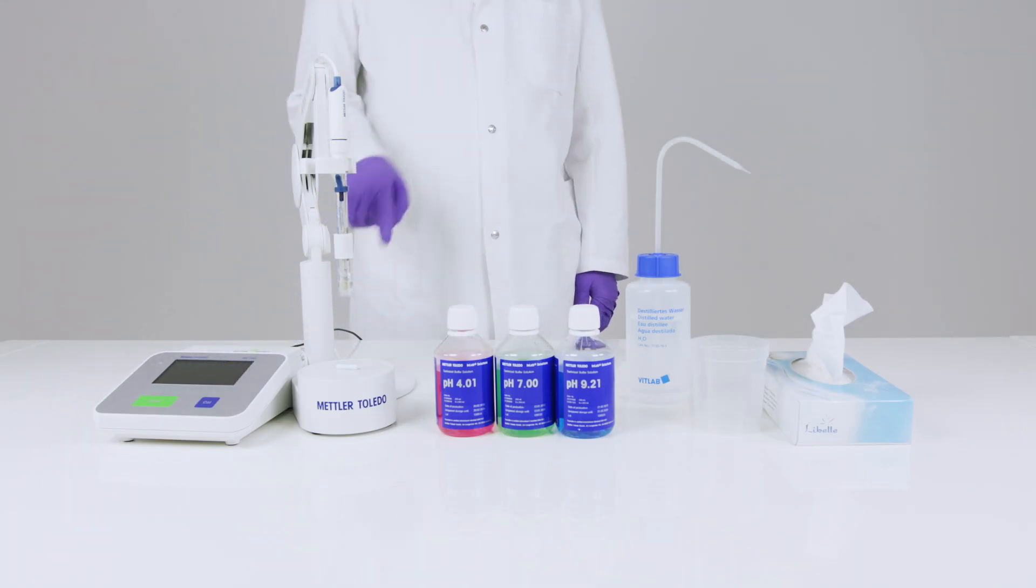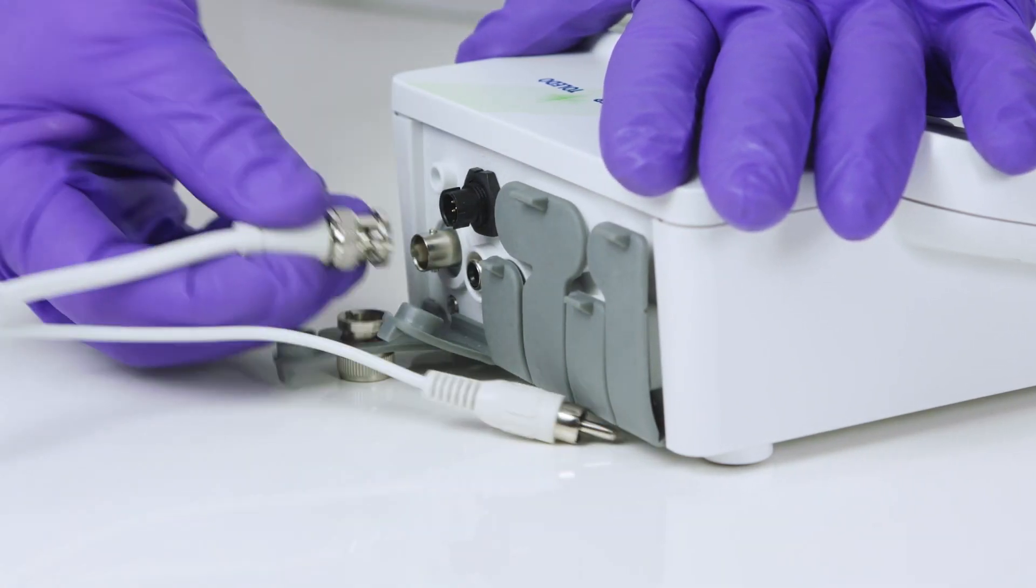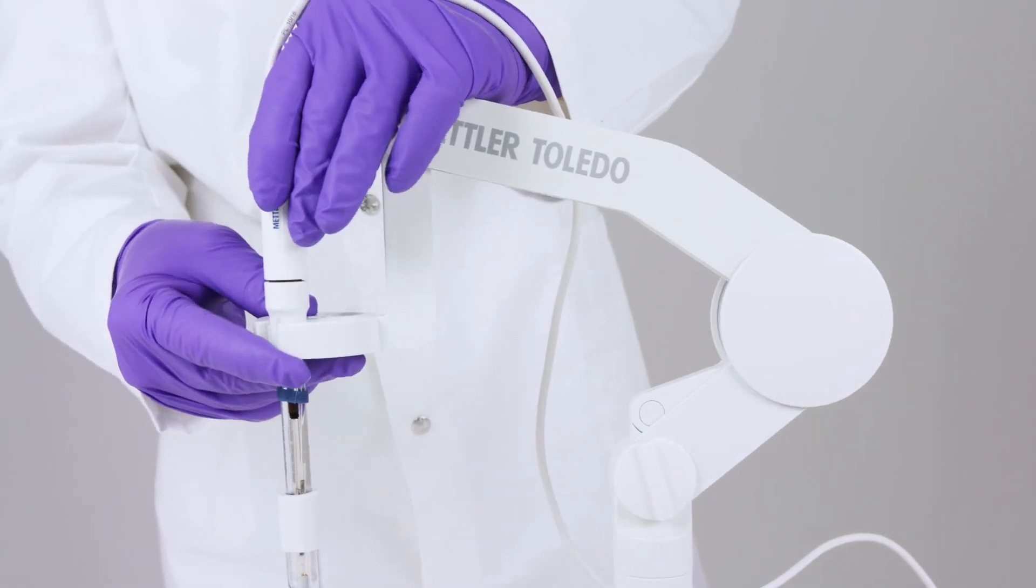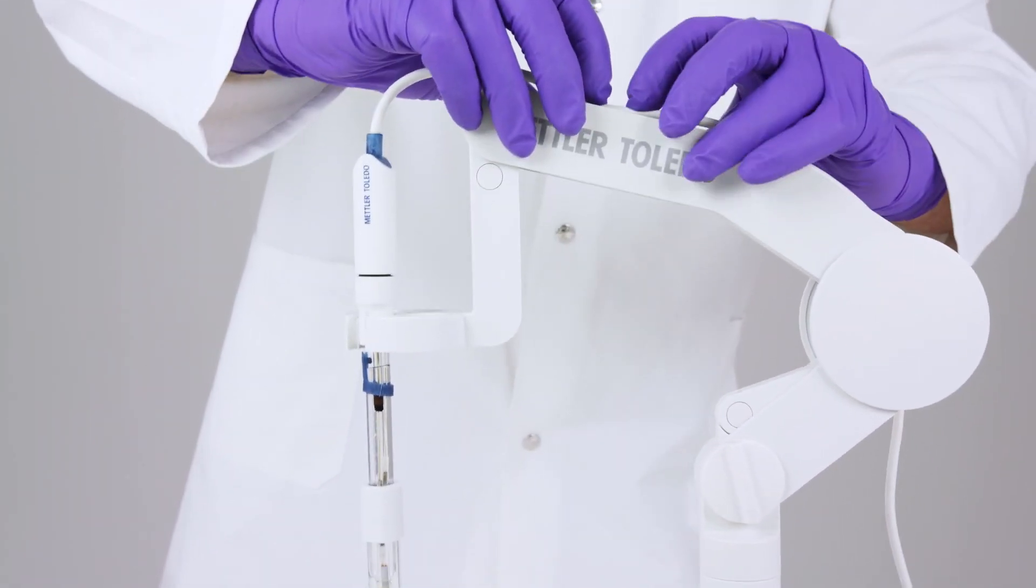You will need the meter, obviously, a sensor, a set of buffers, some distilled water, some lab-style tissues and, of course, a safe pair of hands. When you have everything you need, it's time to build the equipment. Plug in the sensor and its temperature probe if it has one, then place the sensor in the U-place holder. Neatly, Hans! There's a reason for the cable tidy channel.